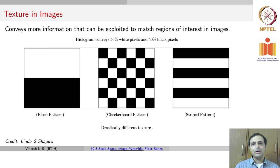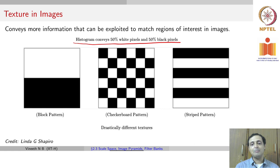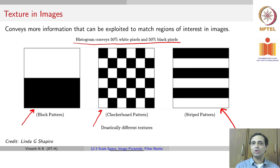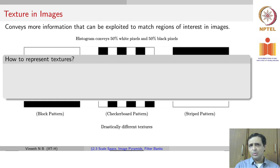Even with a single image, a high-level statistic like a histogram containing 50% white and 50% black pixels could correspond to images of multiple kinds — three very different-looking samples can all share the same histogram. So it is not only important to get global statistics; it is also important to get local texture information to understand what is in images.